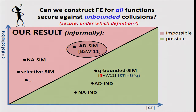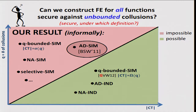We also have a quantitative result that gives us some relationship between the size of the ciphertext and the number of queries in the system. In the existing constructions the size of the ciphertext grows with Q, and we actually have an impossibility result that says that if you want the size of the ciphertext to grow asymptotically slower than Q, that is also impossible for both adaptive and non-adaptive simulation-based definitions.